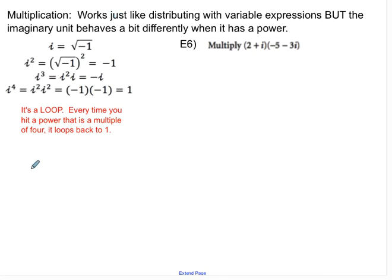Multiplication works just like distributing the variable expressions, but the imaginary unit behaves a little bit differently when it has a power. So I'm going to show you something cool. We know i is the square root of negative 1, and that i squared is that quantity squared, which would just be negative 1. Well, that means that i cubed is i squared, which we just determined was negative 1, times i. So it's negative i, and that i to the 4th is i squared times i squared, which is negative 1 times negative 1, or 1. This is a loop. It's going to loop back every time you hit a power of 4.